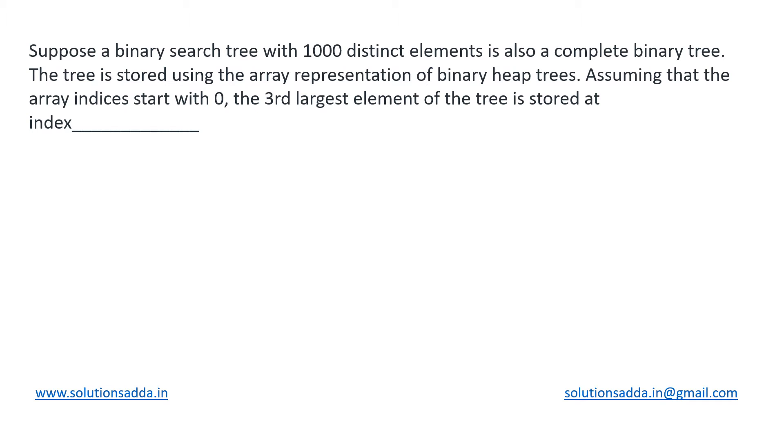This is a data structures question based on binary search tree. We have been given a BST with 1000 distinct elements and it is also a complete binary tree, which means we'll start filling from the left and every node will have zero or two children. The tree is stored using the array representation of binary heap trees. Assuming that the array indices start with zero, the third largest element of the tree is stored at what index?